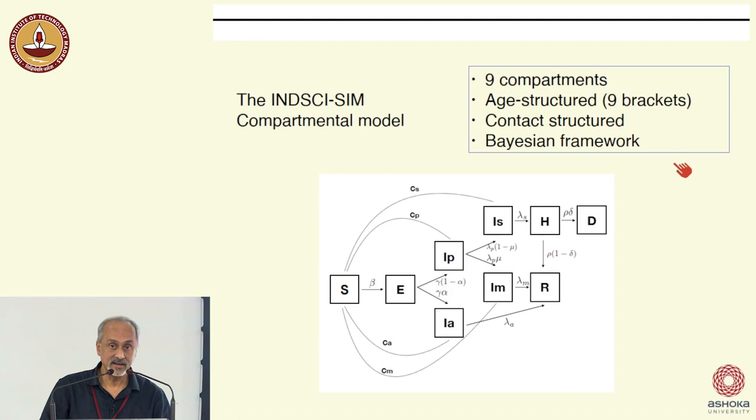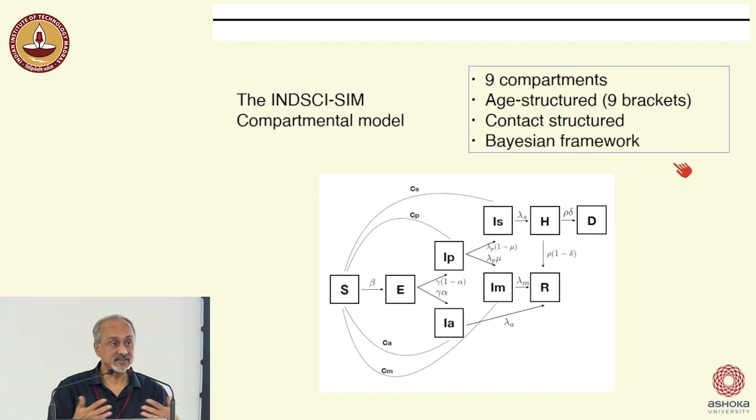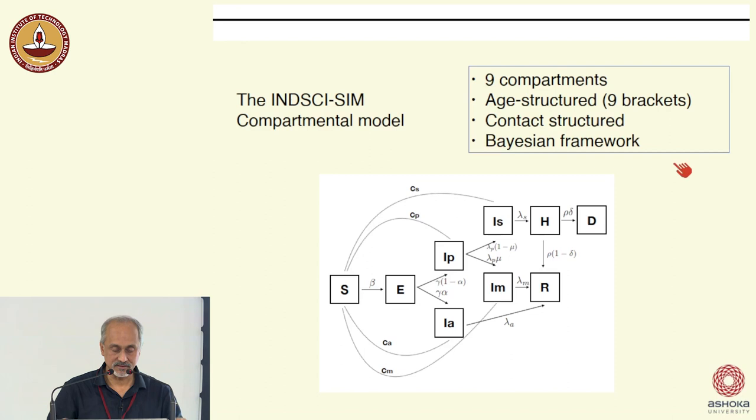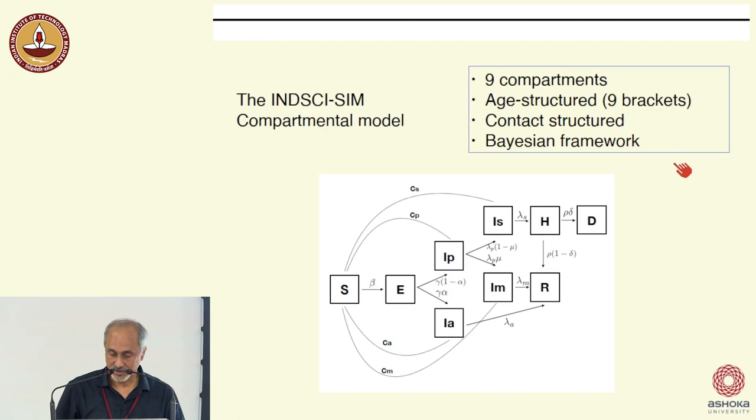There are nine age brackets and nine compartments, giving technically 81 nonlinear coupled equations to solve. We put in information about social contact between different age groups — much of this is diagonal, so most people tend to interact with their own age groups — based on what we know of social information in India. Finally, we incorporate all of this into a Bayesian framework where we prescribe not point values but distribution functions for most of the important quantities that enter the model.